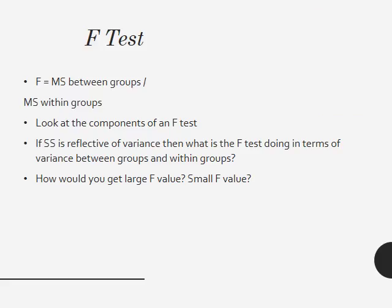The F value is a ratio of the mean squares between groups over the mean squares within groups. This is true for both ANOVA and ANCOVA — they're both doing the same thing. If you have a large F value, that means you have a large between-group variance and a small within-group variance. If you have a small F value, that means you had a smaller between-group variance and a larger within-group variance. A large F value typically becomes more probably significantly different, and the smaller the F value gets, the less likely you have significant differences in your groups.